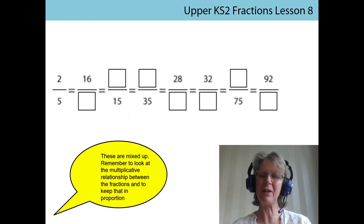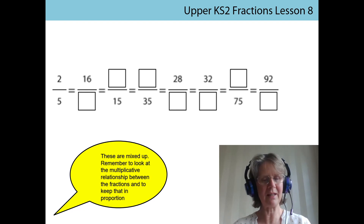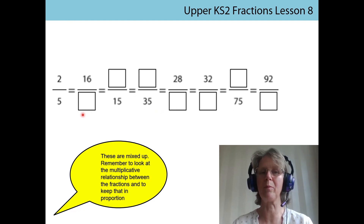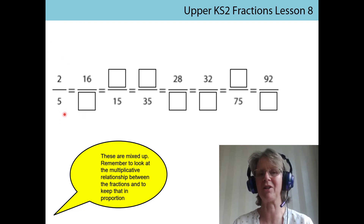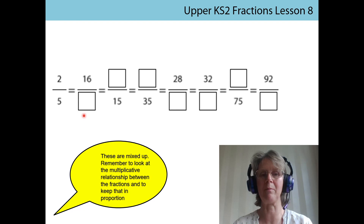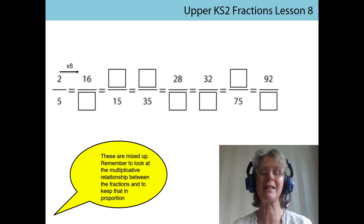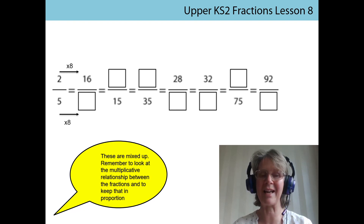This one seemed a bit trickier to me than the previous ones. I think the reason for that is because the denominators aren't in a sequence, so we had to really keep thinking about the proportional relationship within, or we needed to be looking at the scaling relationship across. Let's start by looking at the very first empty number box. I noticed there was a scaling relationship of times eight for the numerator, and then I needed to do the same to the denominator, which gave me the answer 40.